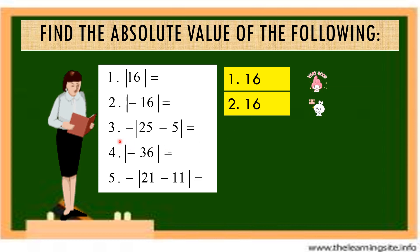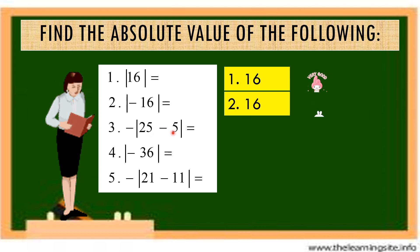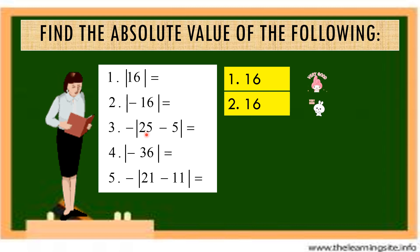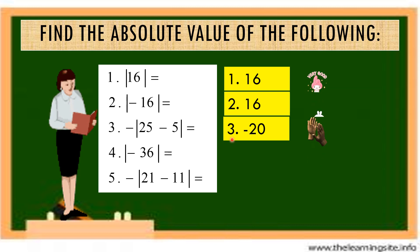Number 3: the opposite of the absolute value of 25 minus 5. First, we find the absolute value of 25 minus 5, then we get the opposite of that answer. The result is negative 20. Let's clap our hands.